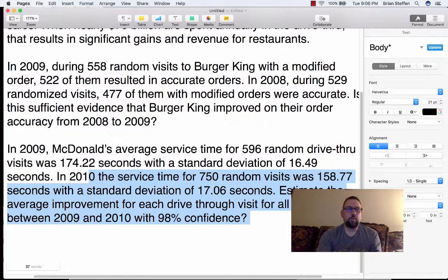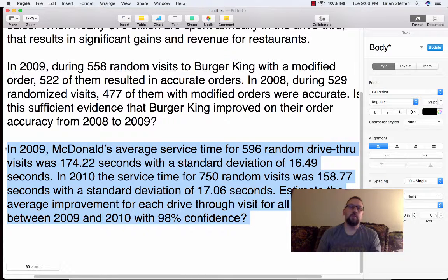Alright, next video with respect to doing a two-sample scenario. In 2009, McDonald's average service time at 596 randomly selected drive-thru restaurant visits was 174.22 seconds with a standard deviation of 16.49 seconds.